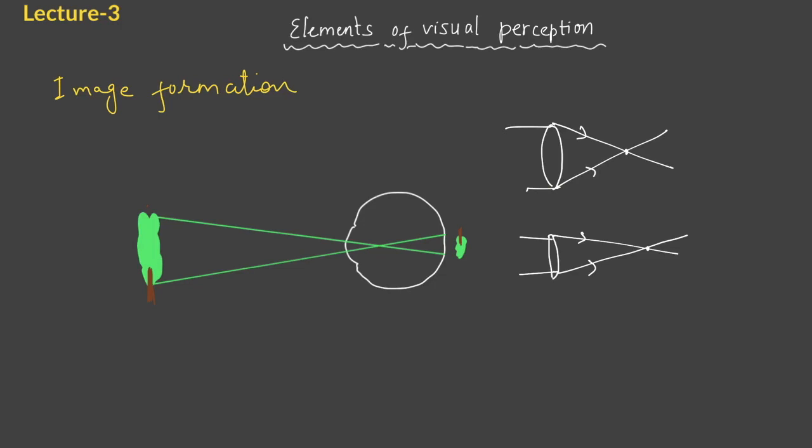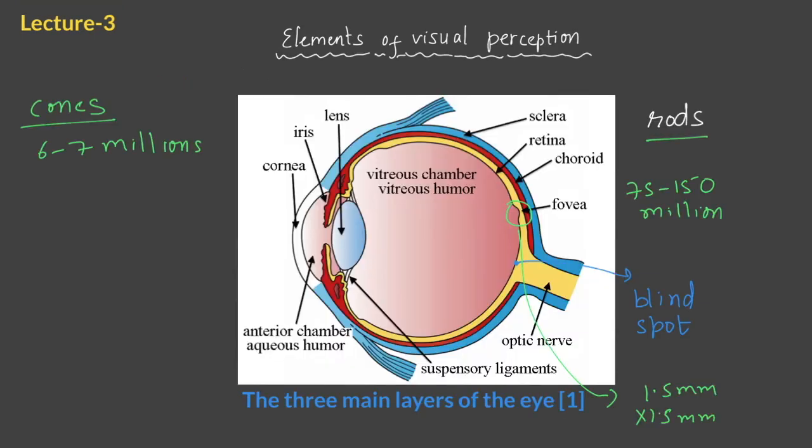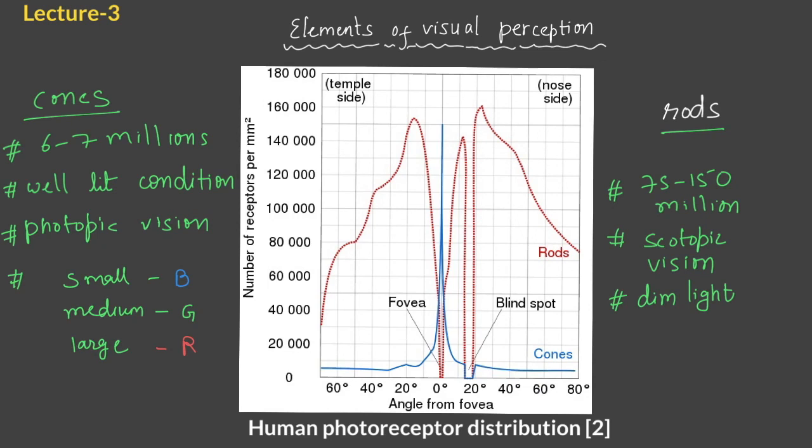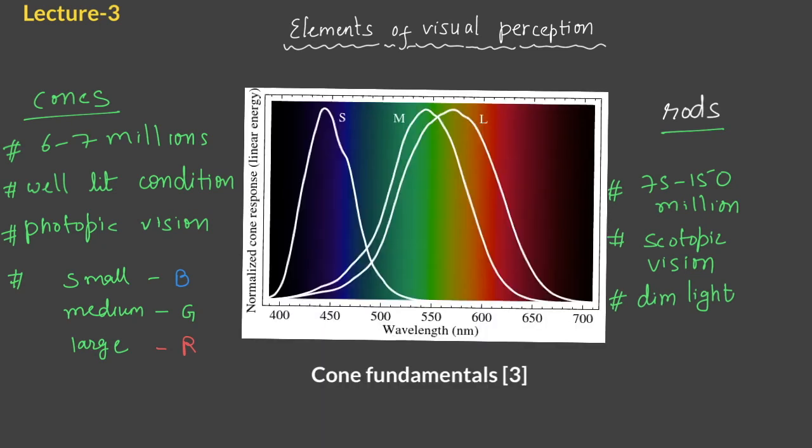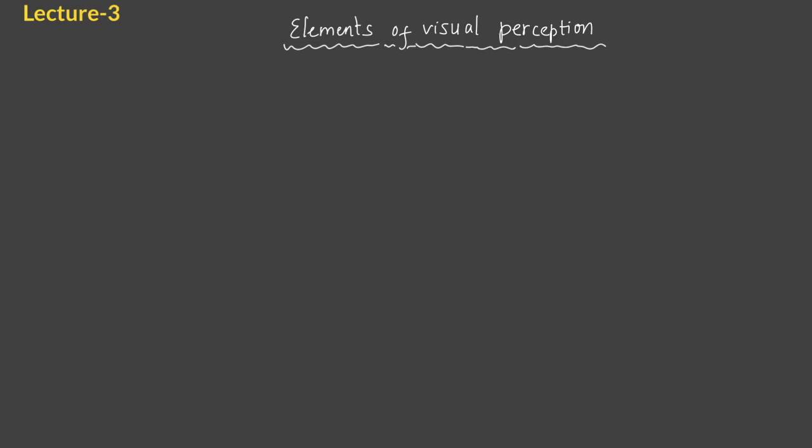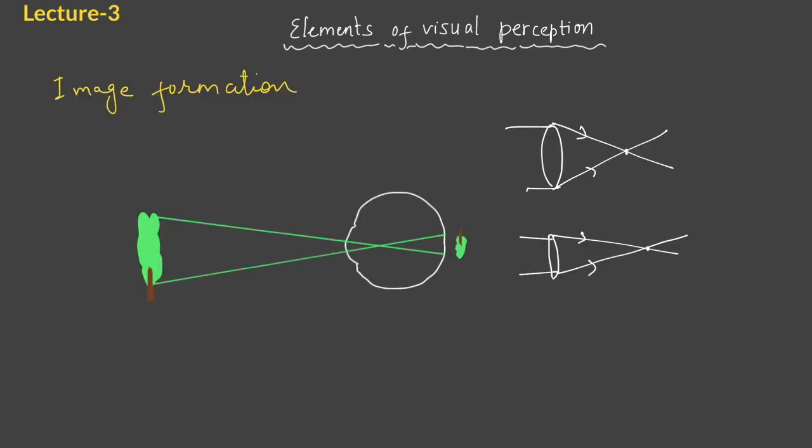So that's it for elements of visual perception. What we have seen is structure of the human eye, then we looked at the distribution of rods and cones in the human eye, and lastly the types of cones which can detect different wavelength of light, and at last the image formation by human eye. Thank you.